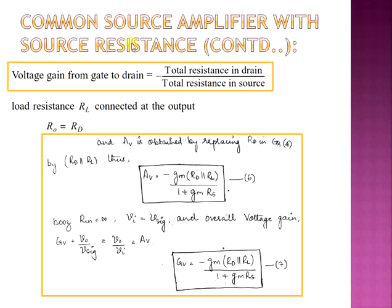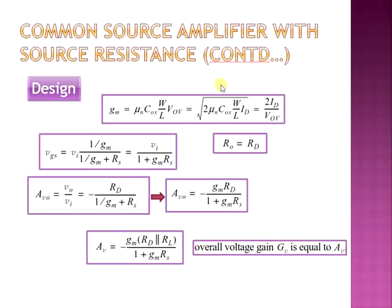For the design of the CS amplifier with source resistance: VGS = VI / (1 + GM×RS), where (1 + GM×RS) is the feedback factor. The output resistance R0 = RD. The open circuit voltage gain AV0 = −GM×RD / (1 + GM×RS). The gain of the amplifier is the parallel combination of RD and RL divided by (1 + GM×RS), and equals the overall gain GV.